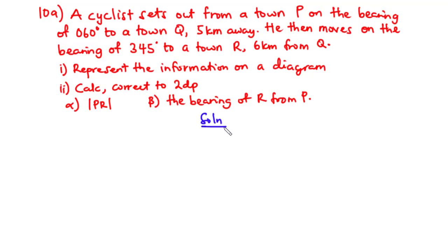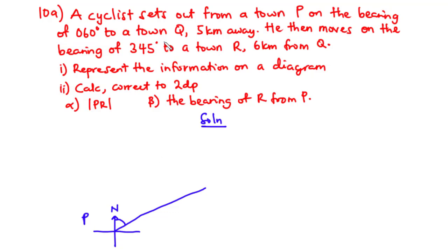So from the question, we are told that a cyclist sets out from town P on a bearing of 60 degrees to town Q. Assuming this is our point P, this is the geographical north, and bearings are always measured from the geographical north. So this is 60 degrees, and the cyclist moves from point P to point Q. This angle is 60 degrees, and because these two angles alternate, this angle is also 60 degrees. 90 minus 60 is 30, so this angle is also 30 degrees.